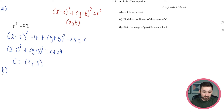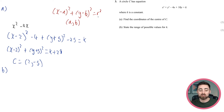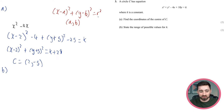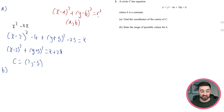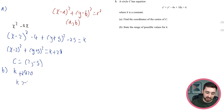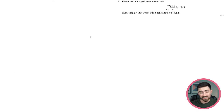For the range of possible values of k: comparing to r squared, the right-hand side k plus 29 must be positive (r squared cannot be zero or negative, as that would give no circle). Therefore k plus 29 must be greater than 0, meaning k must be greater than minus 29.